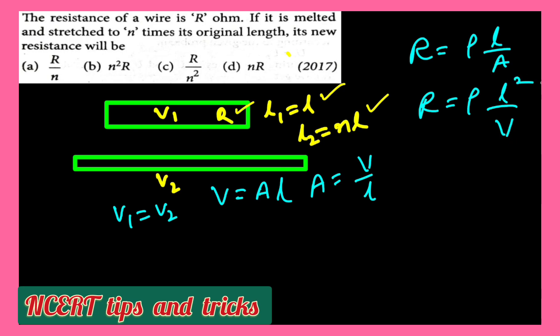So resistance equals ρL by A. A means you will write V by L, that is ρL² by V. So resistance is proportional to length squared.